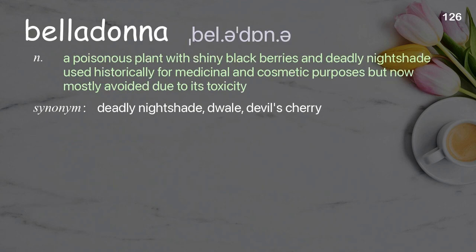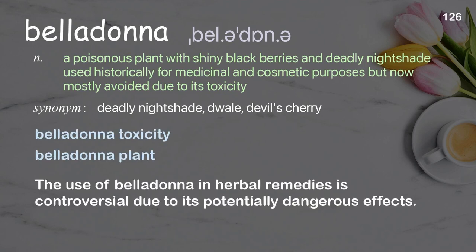Belladonna: a poisonous plant with shiny blackberries and deadly nightshade, used historically for medicinal and cosmetic purposes, but now mostly avoided due to its toxicity. Examples: belladonna toxicity, belladonna plant. The use of belladonna in herbal remedies is controversial due to its potentially dangerous effects.